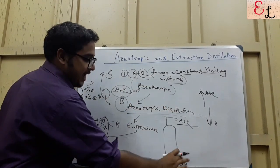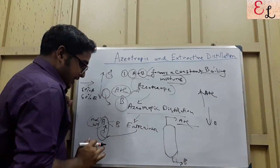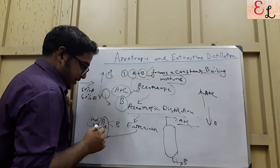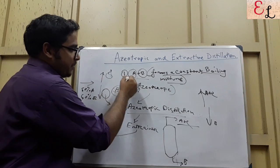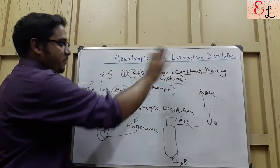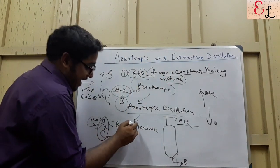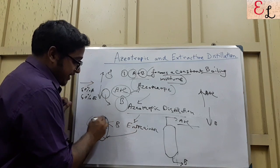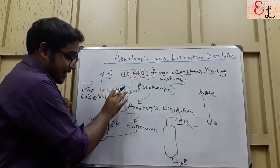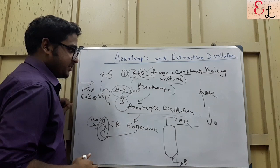But we have separated A and B, which was our desired goal. We were trying to find a method by which A and B can be separated because they were forming a constant boiling mixture. So we added an entrainer C that forms an azeotrope with A and removes B in the process.